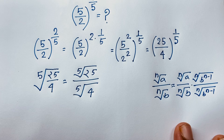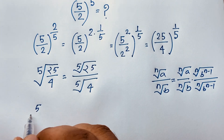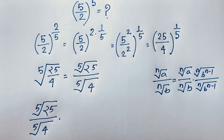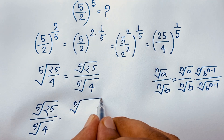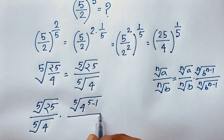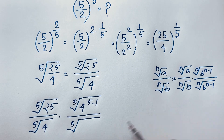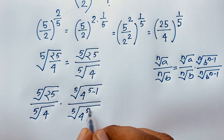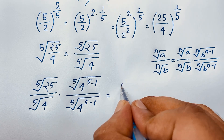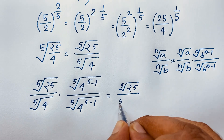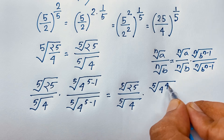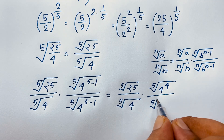Now, if I apply this formula here, it will be 5th root of 25, over 5th root of 4, times 5th root of b to the power n minus 1 — so it will be 4 to the power 5 minus 1. Then, applying this formula, it will be 4 to the power 5 minus 1. This gives 5th root of 25 over 5th root of 4, times 5th root of 4 to the power 4.